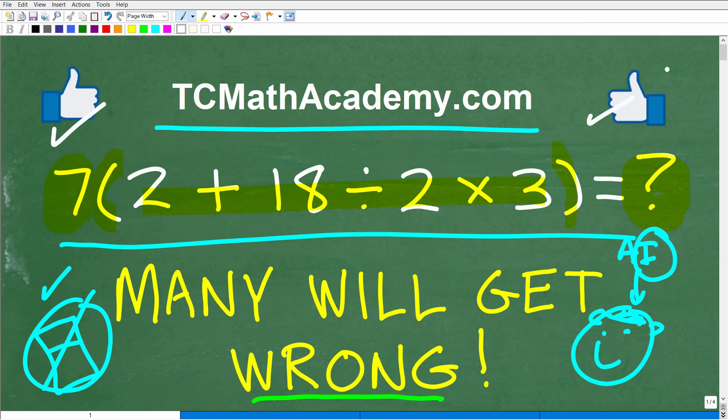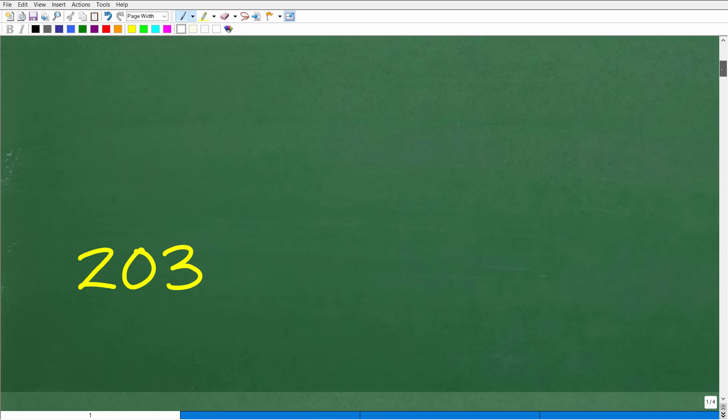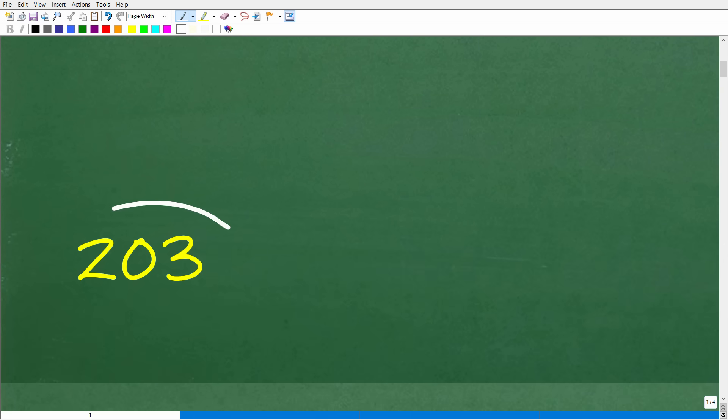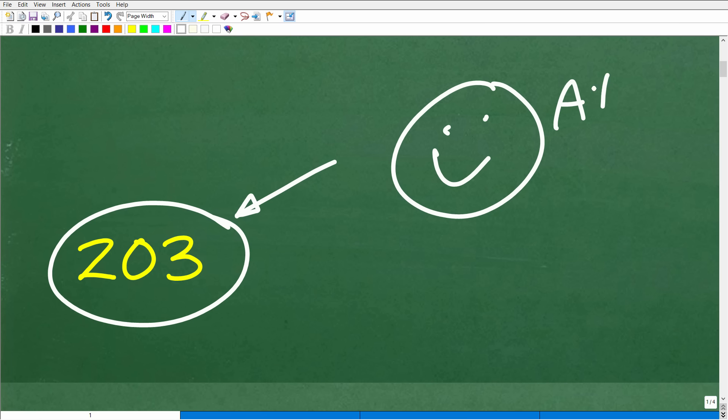Okay, so were you able to do this problem? Hopefully so. Put your answer again into the comment section. Let's go ahead and take a look at the right answer. The correct answer is 203. Okay, so how did you do? Well, hopefully you got this right. And if you did get this right, I'm going to give you a nice little happy face and A+, a 100% and multiple stars. So you can brag to your friends and family that indeed you are a certified professional expert in the order of operations.